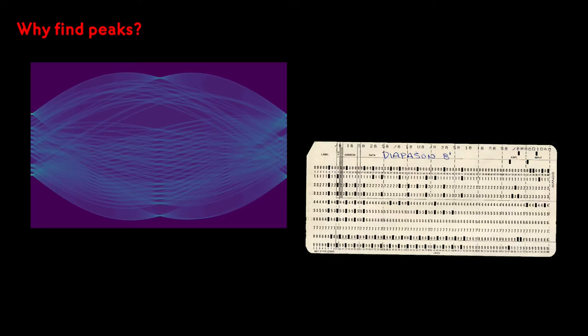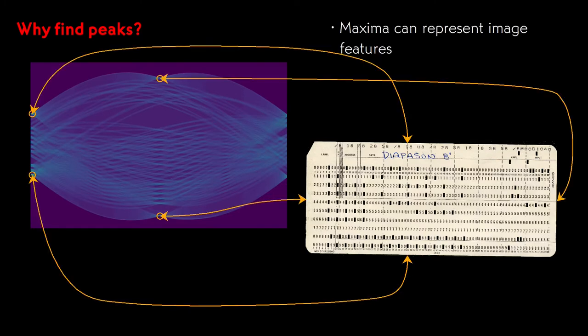One example that we had in an earlier video created an abstract image whose peaks corresponded one-to-one with straight edges in an input image. We used these peaks to find the straight edges in a picture of a punched card in order to go on to find the holes and recover the data.